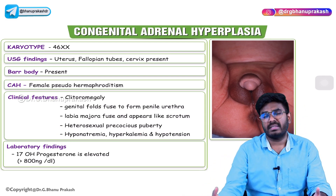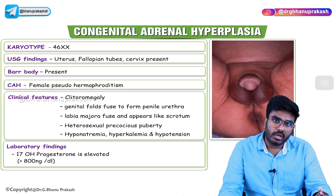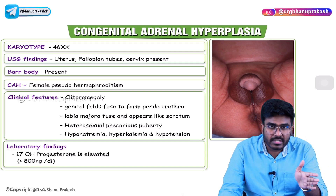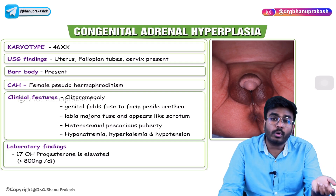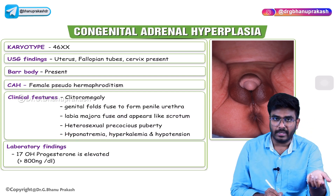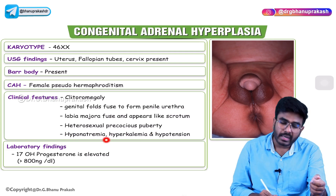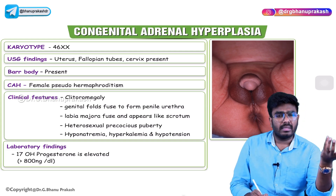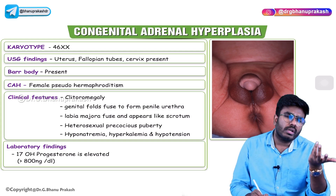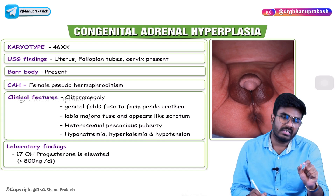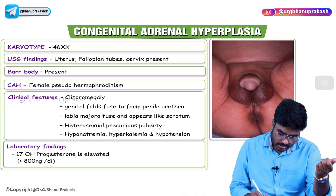Since this infant has no aldosterone or cortisol, there will be loss of sodium from the body. Normally aldosterone helps in sodium reabsorption; without aldosterone, sodium reabsorption cannot happen, causing hyponatremia. Normally aldosterone also causes potassium excretion; without aldosterone, potassium is retained in the body, causing hyperkalemia. Additionally, as discussed in the previous video, cortisol sensitizes blood vessels to catecholamines and maintains vascular tone, increasing blood pressure. So whenever there is no cortisol, that causes hypotension.